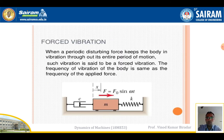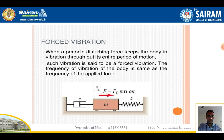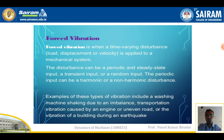Forced vibration is when a periodic disturbance force keeps the body vibrating throughout its entire period of motion. The frequency of vibration of the body is the same as the frequency of the applied force: F = F₀ sin(ωt). When a time-varying disturbance — load, displacement, or velocity — is applied to a mechanical system, the resulting vibrations are called forced vibrations. Examples include a washing machine shaking due to imbalance, transportation vibration on uneven roads, and building vibration during an earthquake.